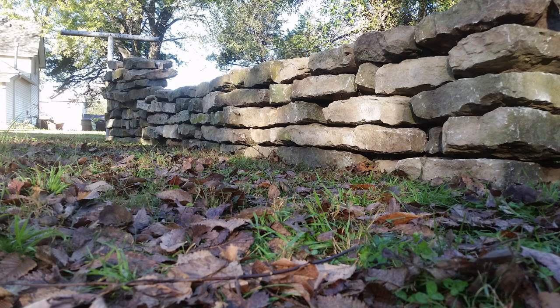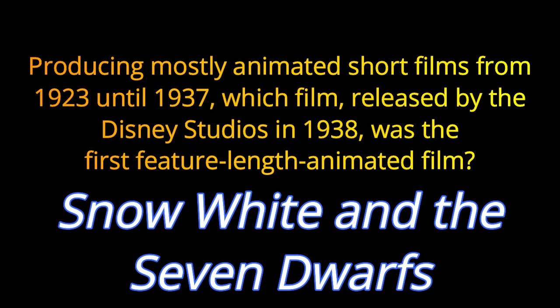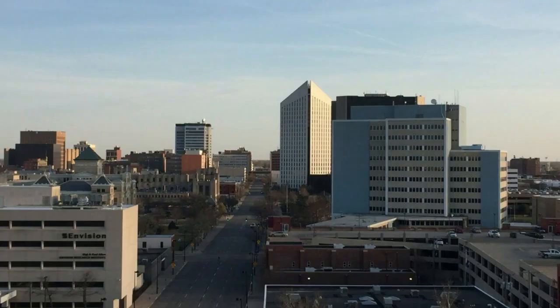Question 13. Producing mostly animated short films from 1923 until 1937, which film released by Disney Studios in 1938 was the first feature-length animated film? The answer is Snow White and the Seven Dwarfs.